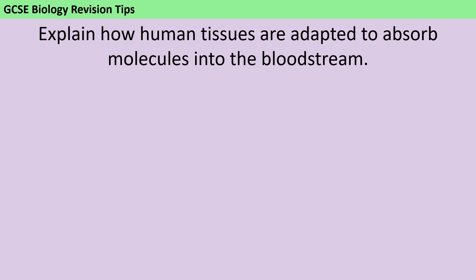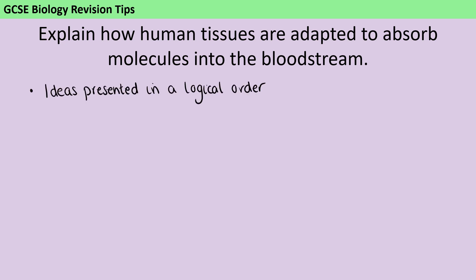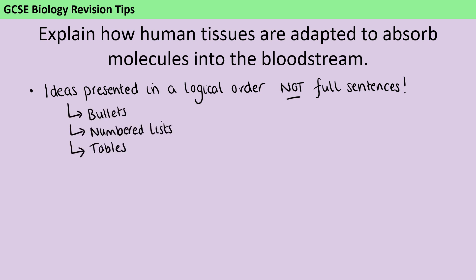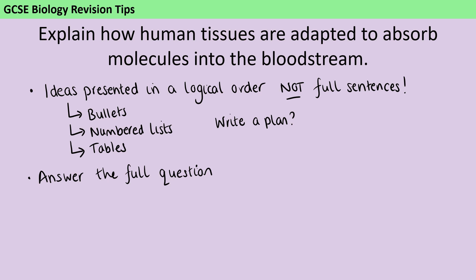Today's question asks you to explain how human tissues are adapted to absorb molecules into the bloodstream. Your answers need to be presented in a logical fashion, but that doesn't mean they need to be in full sentences. It's absolutely fine to use bullet points, a numbered list or a table, and you might even want to consider writing a little plan before you start. It's also important that you answer the full question, so ideally we're going to be thinking about more than one tissue, more than one molecule, and probably more than one absorption method as well.